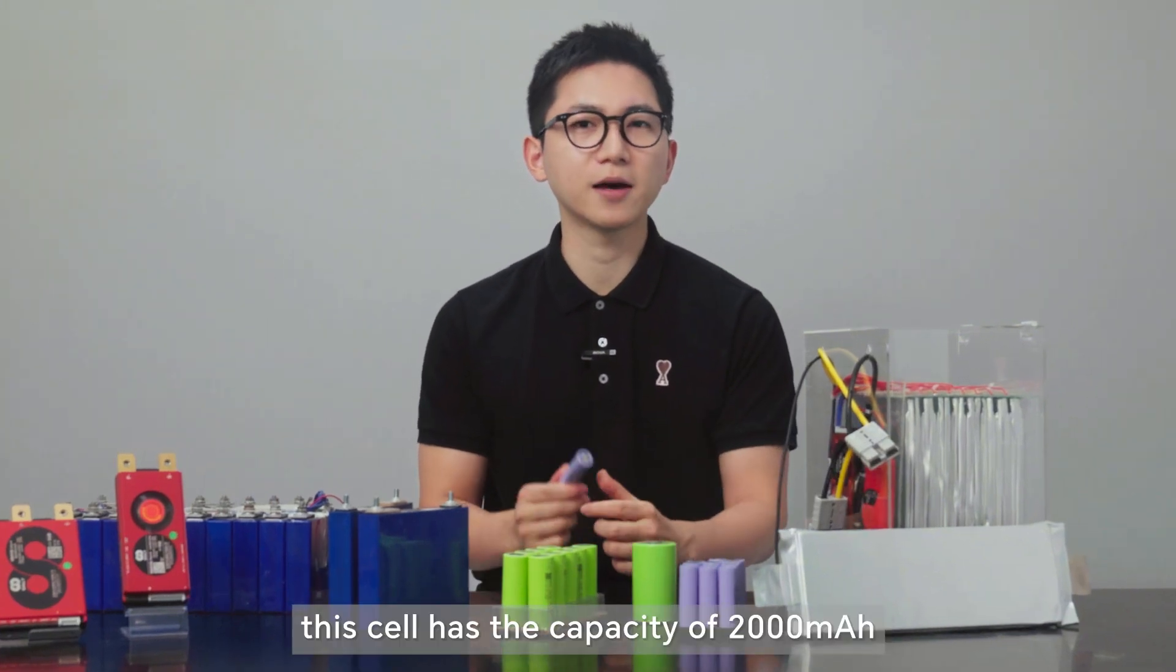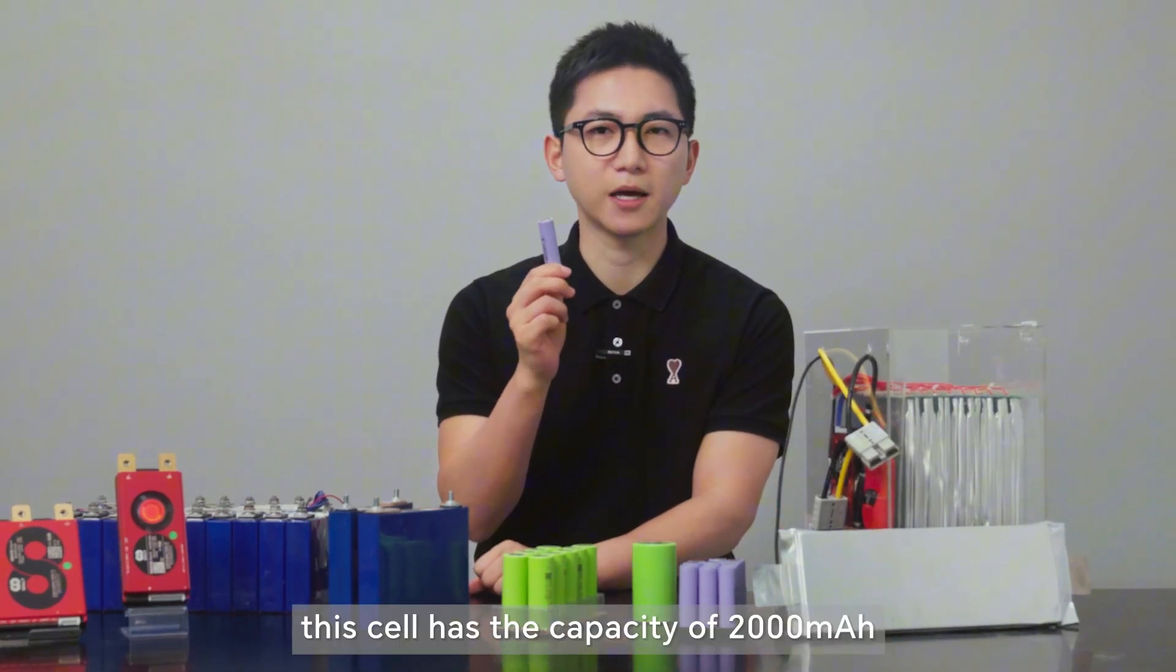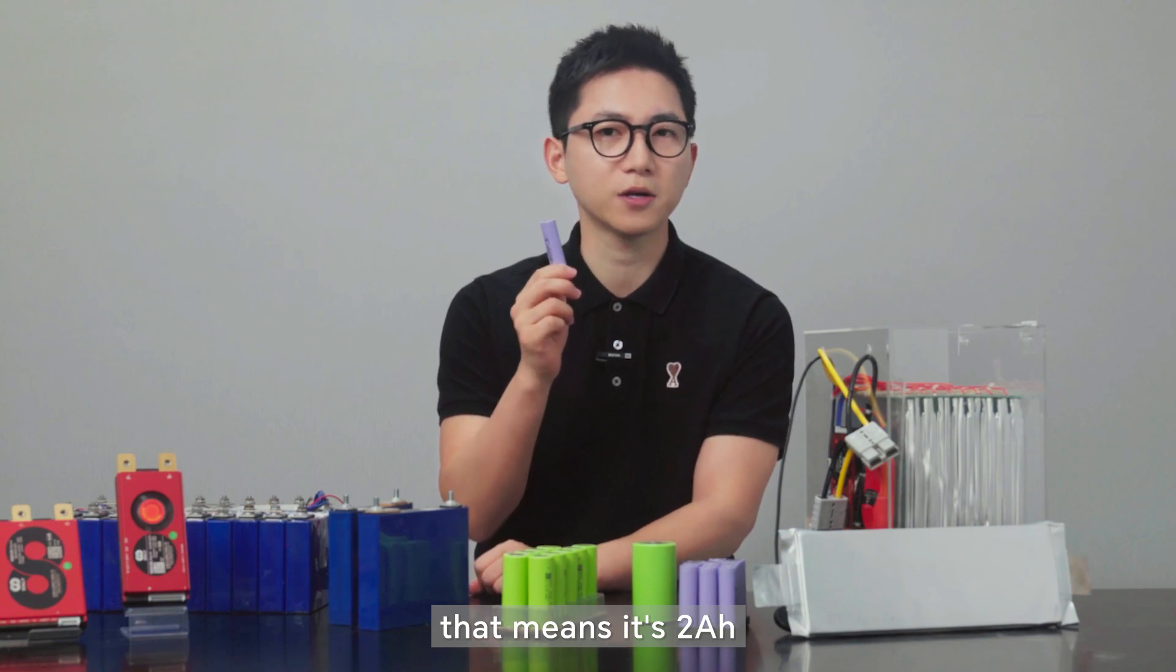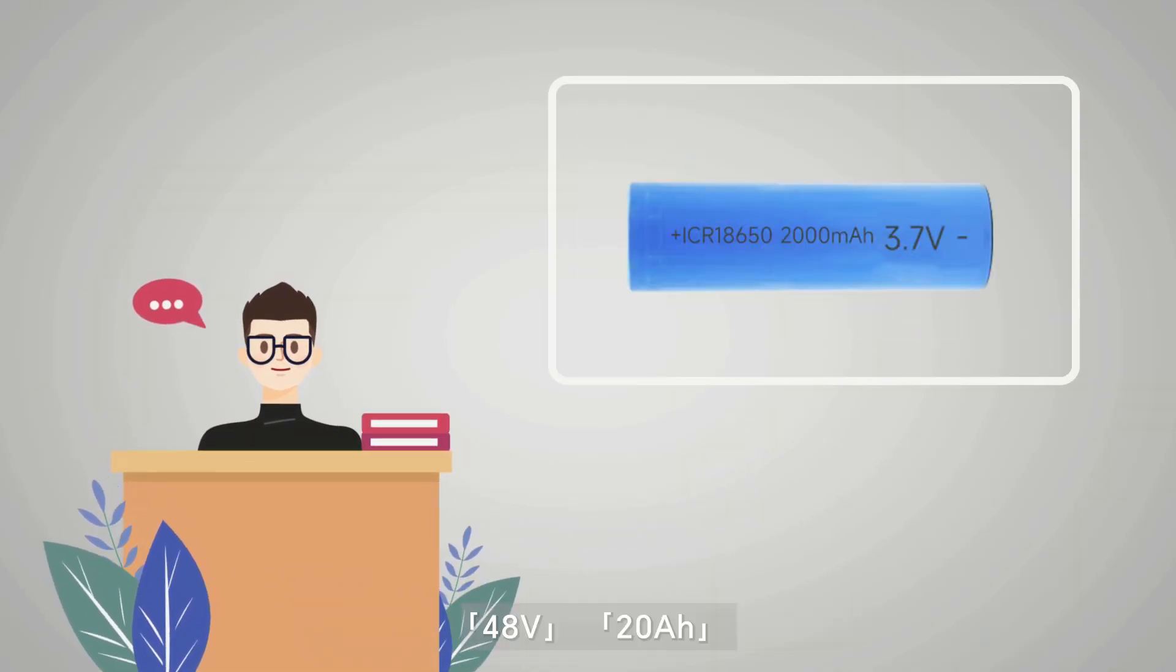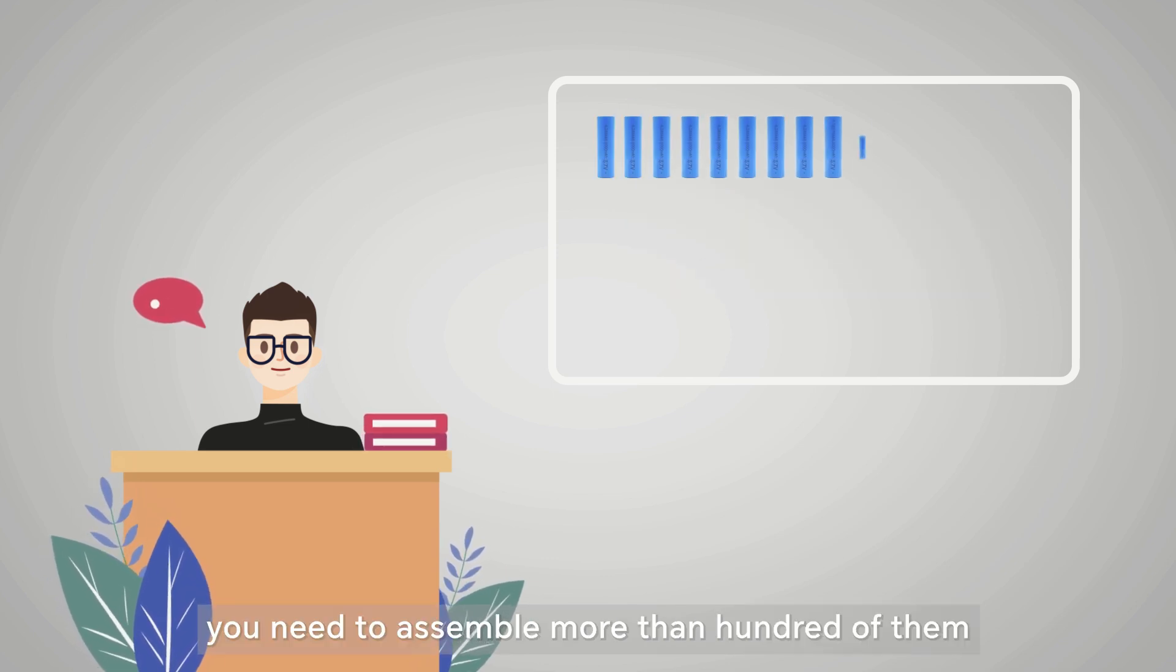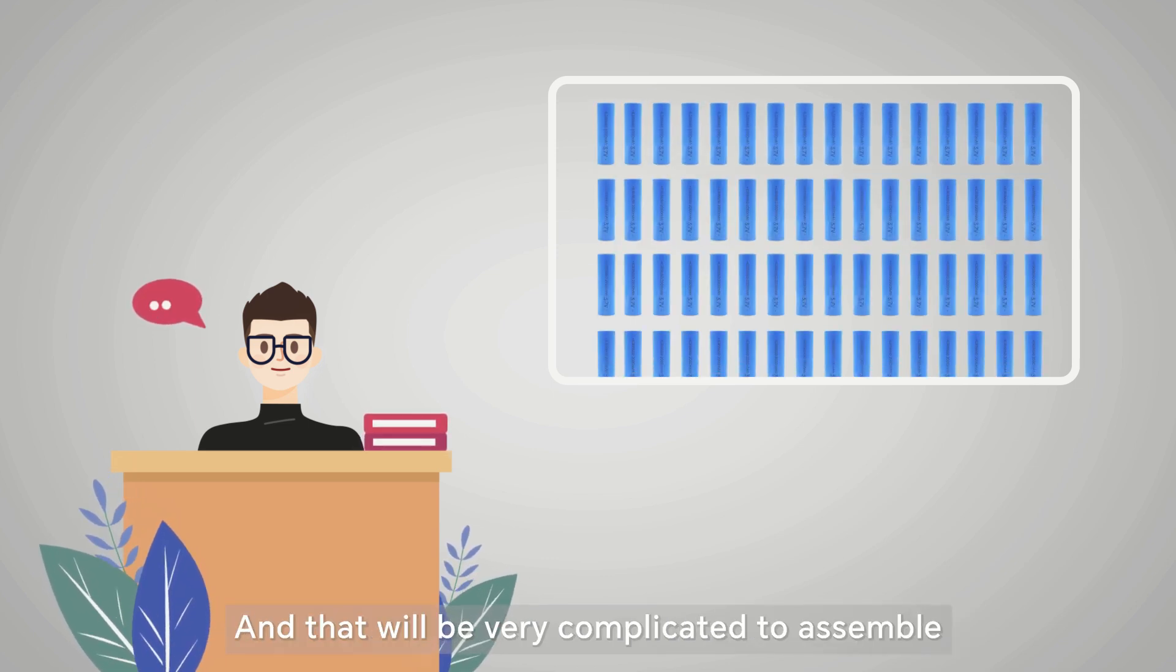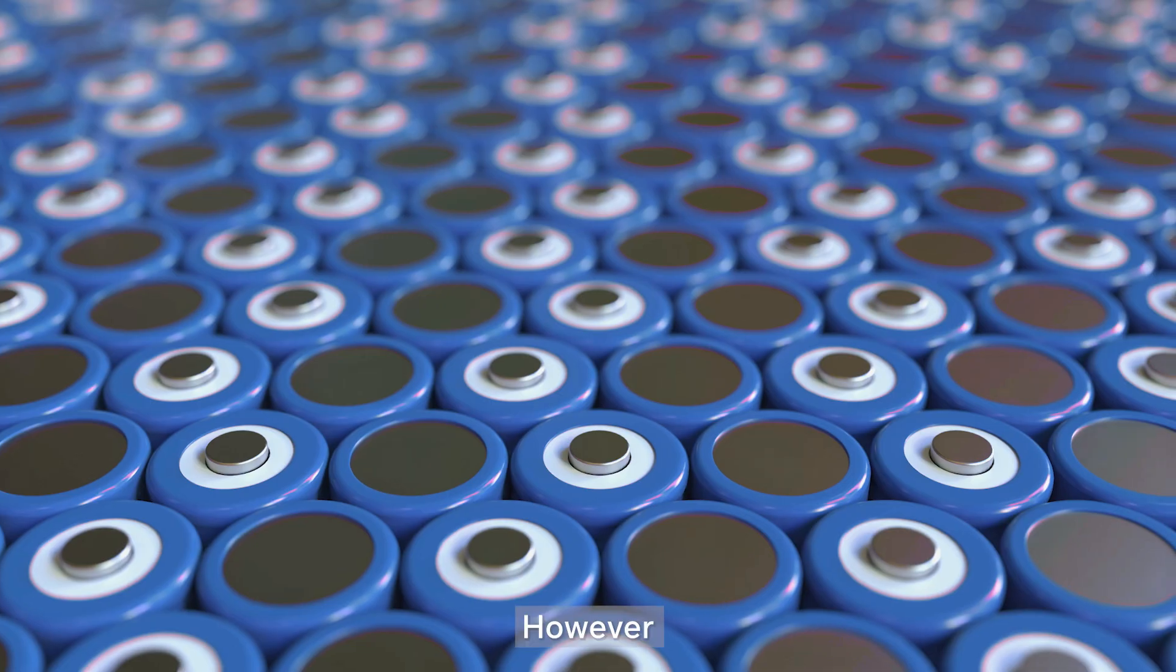For example, this cell has the capacity of 2000mAh, that means it's 2Ah. If you want to make a regular electric vehicle battery like 48V 20Ah, you need to assemble more than 100 of them and that would be very complicated to assemble.